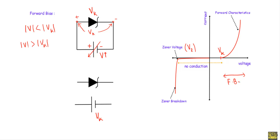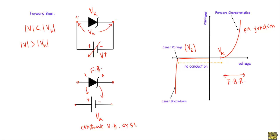The forward bias characteristics of the Zener diode are quite similar to those of an ordinary P-N junction diode. When in forward bias with applied voltage greater than the built-in potential, we replace the Zener diode with a voltage source equal to its built-in potential. The positive terminal of this voltage source is on the P side and the negative terminal is on the N side. This is known as the constant voltage drop model or simplified equivalent circuit.